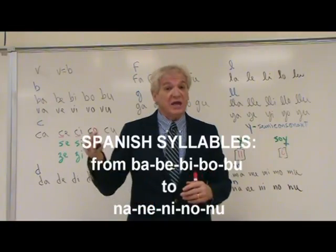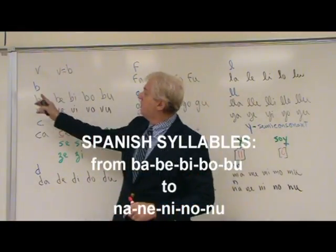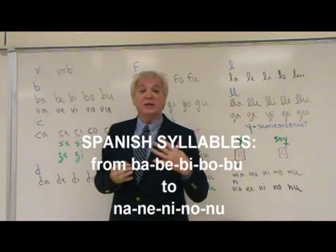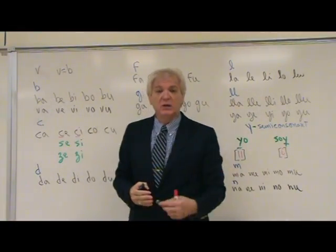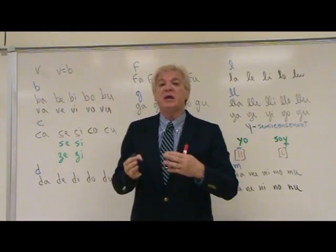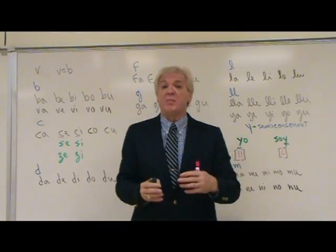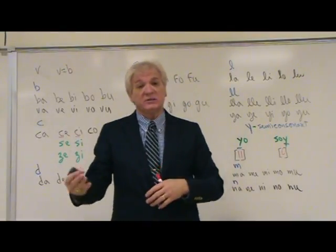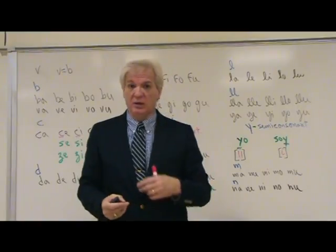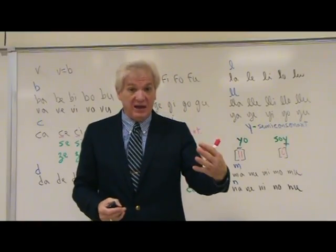Continuing with our sounds, we get to looking at the letters and see how they make syllables. A syllable is a combination of a consonant and a vowel — B and A is Ba.